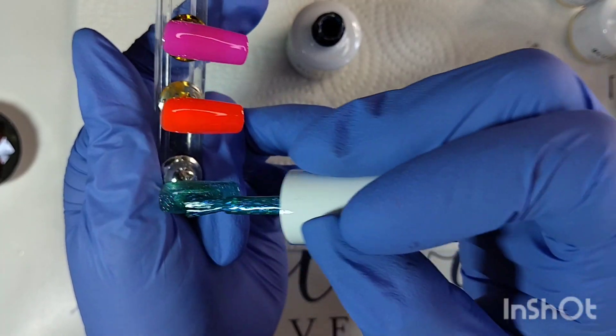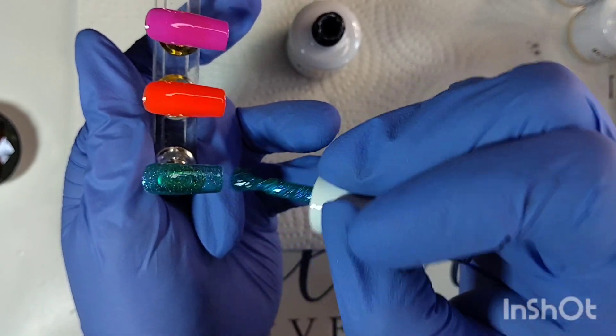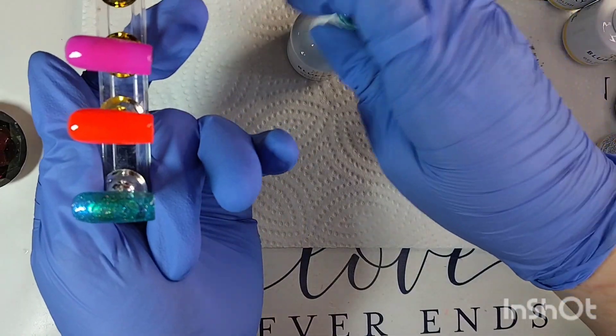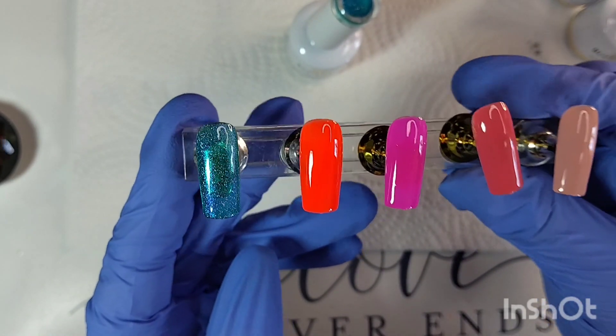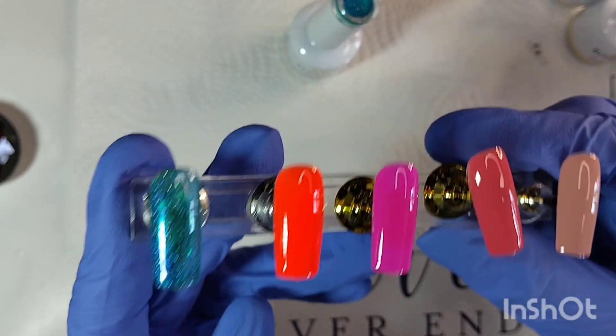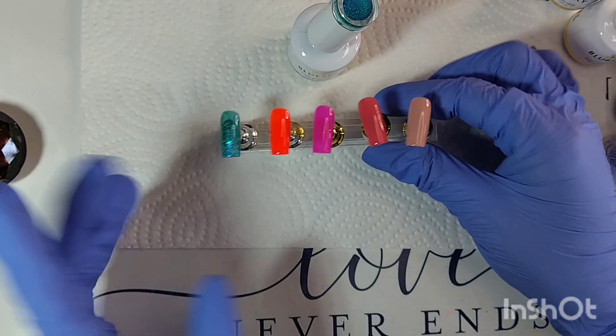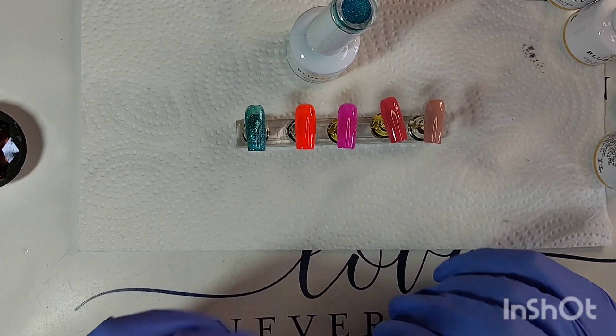This one is Deep Sea. You gotta have these added to your collection. It's a great company. Great polishes. I love them. If I enjoy them, you're gonna enjoy them. There you go, you can see the green and then the shift to blue, very pretty, and all that glitter, gorgeous. Let me put these in the lamp for 60 seconds.